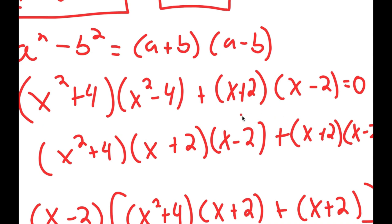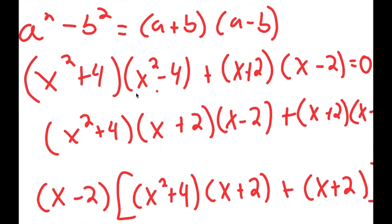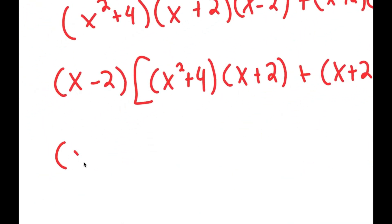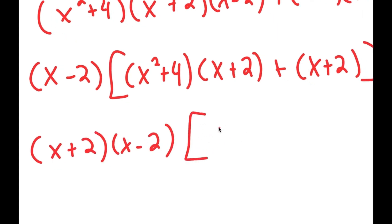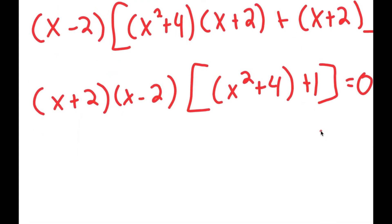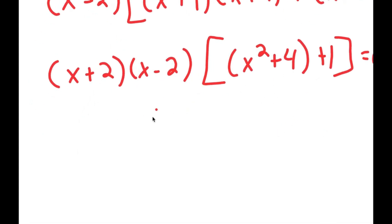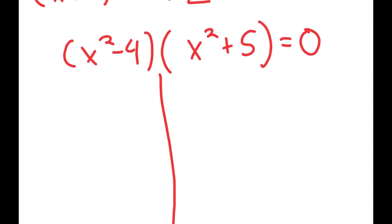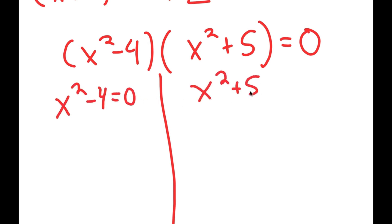By rewriting x squared minus 4 as x squared minus 2 squared, that equals x plus 2 times x minus 2. So I now have x plus 2 times x minus 2, plus x plus 2 times x minus 2, equal to zero. Factoring out x minus 2 and then x plus 2 as well, I get x plus 2 times x minus 2 times the quantity x squared plus 4 plus 1, equal to zero. This simplifies to x squared minus 4 times x squared plus 5, equal to zero, giving me two equations: x squared minus 4 equals zero, and x squared plus 5 equals zero.